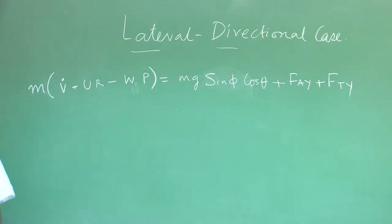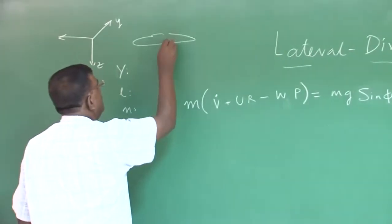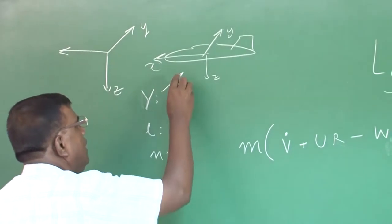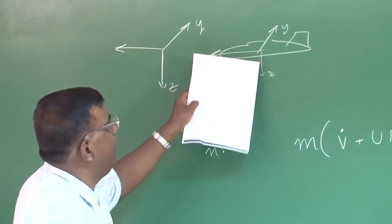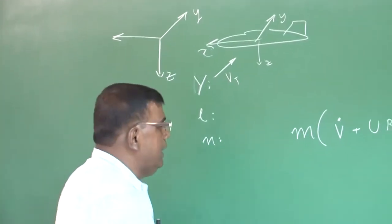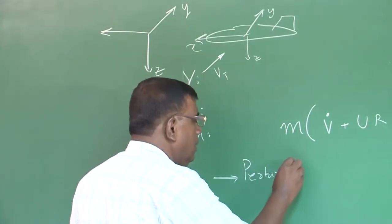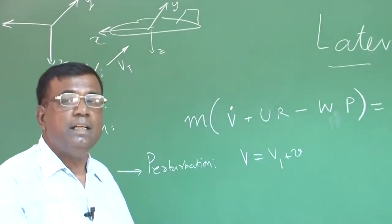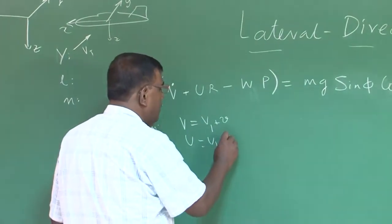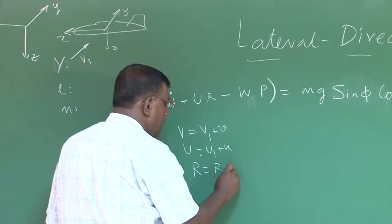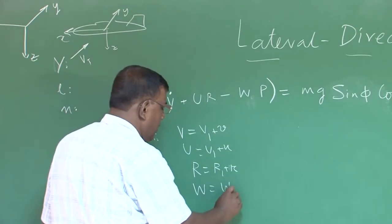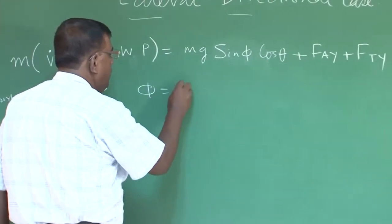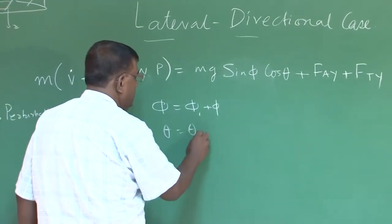The next step is to introduce perturbation. We set: v = v₁ + δv, u = u₁ + δu, r = r₁ + δr, w = w₁ + δw, p = p₁ + δp, φ = φ₁ + δφ, θ = θ₁ + δθ. We are neglecting the thrust component F_Ty, with the understanding that we know how to handle it. F_Ay is the perturbed aerodynamic force along the y-direction.